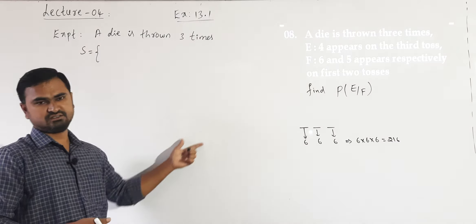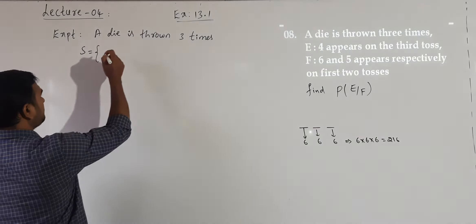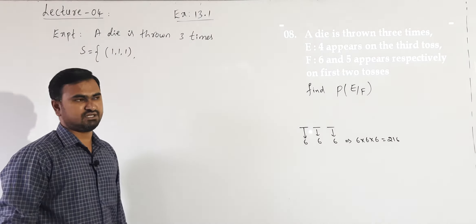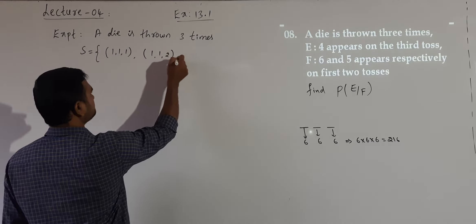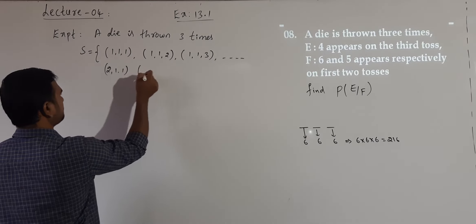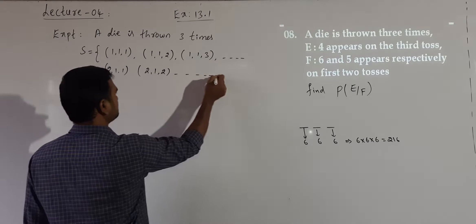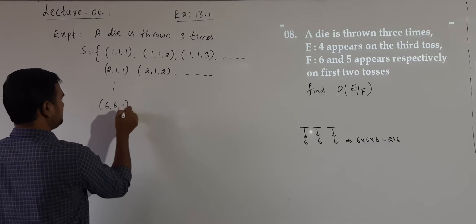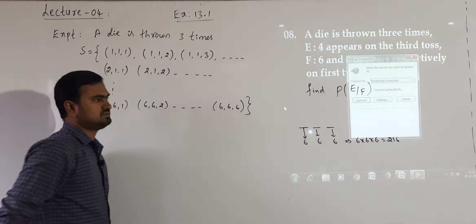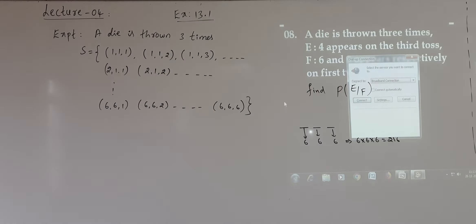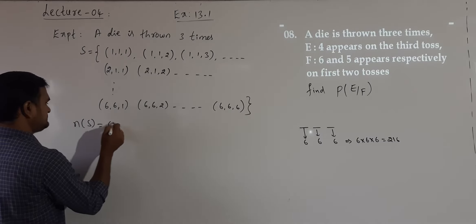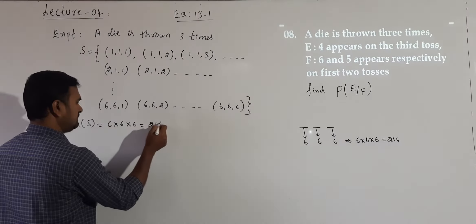It is not possible to write all 216 outcomes, but they range from (1,1,1), (1,1,2), (1,1,3) and so on, through (2,1,1), (2,1,2), all the way up to (6,6,6). So N(S) = 6 × 6 × 6 = 216 outcomes in total.